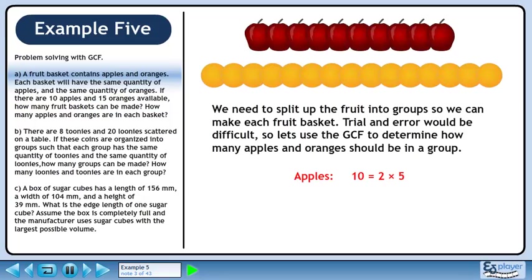There are 10 apples. 10 is a product of 2 and 5. There are 15 oranges, 15 is a product of 3 and 5. Draw a rectangle around the 5s common to each set. The GCF is 5, so 5 baskets can be made.